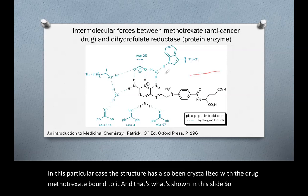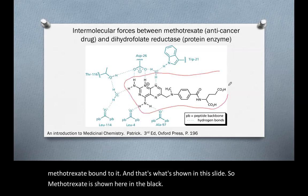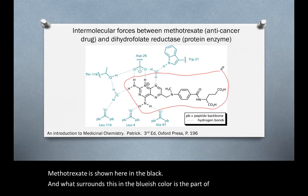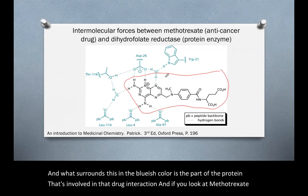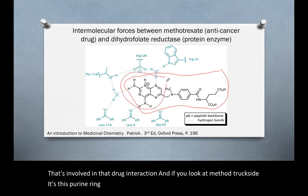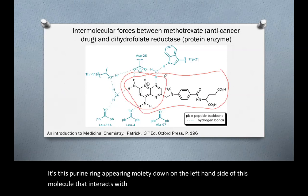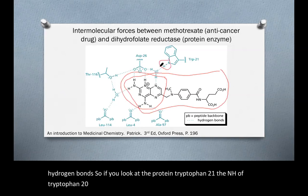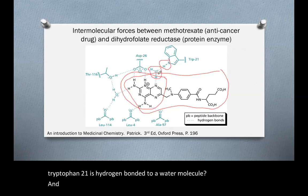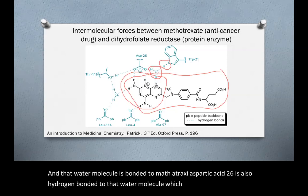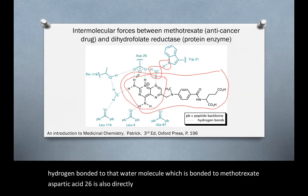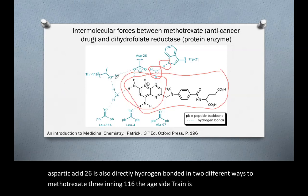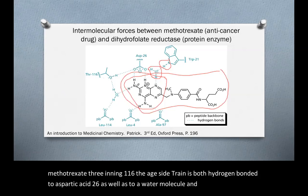Methotrexate is shown here in black, and the surrounding bluish color represents the part of the protein involved in the drug interaction. It is the purine moiety on the left-hand side of the molecule that interacts with the protein through an intricate series of hydrogen bonds. Tryptophan-21's NH is hydrogen bonded to a water molecule, which is bonded to methotrexate. Aspartic acid-26 is also hydrogen bonded to that water molecule and is directly hydrogen bonded in two different ways to methotrexate.